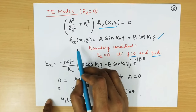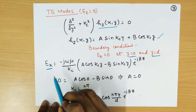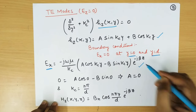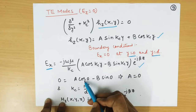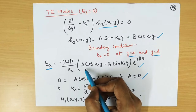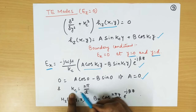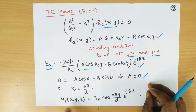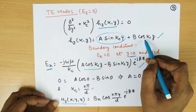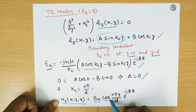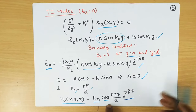So we write the boundary condition in terms of E_X: E_X equals 0 at y equal to 0 (bottom plate) and E_X equals 0 at y equal to D (top plate). We convert H_Z into the transverse field E_X using the same formula as before and apply the boundary condition. When E_X equals 0 at y equal to 0, we get A equal to 0, leaving only the term with B. Also k_c equals n pi over D from the second boundary condition. So H_Z(x,y,z) equals B_n cos(n pi y over D) times e to the power minus j beta z.